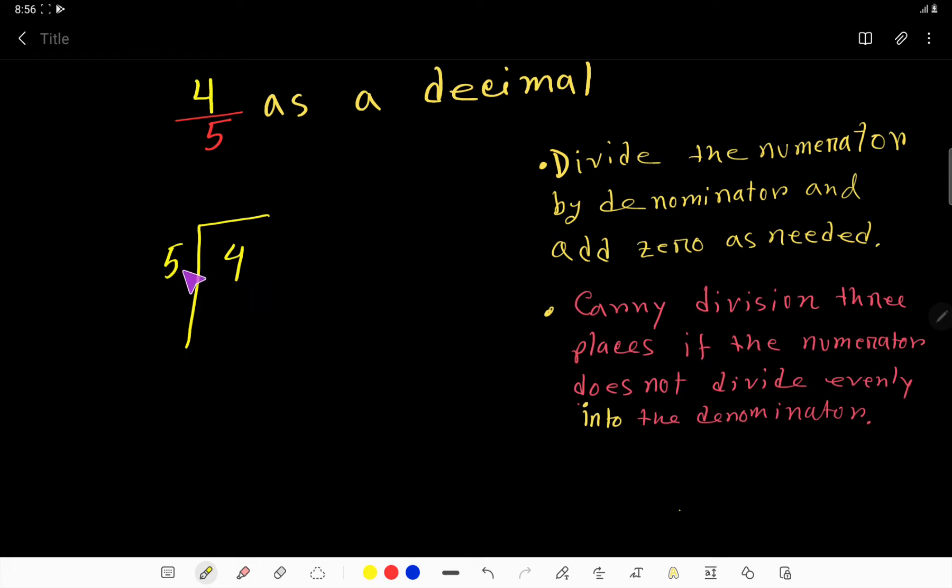So we can rewrite 4 like 4 decimal point 0, or 4 decimal point 0 0, or you can take any number of zeros according to your need.